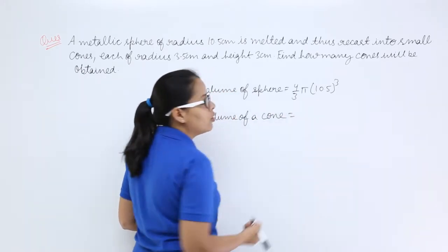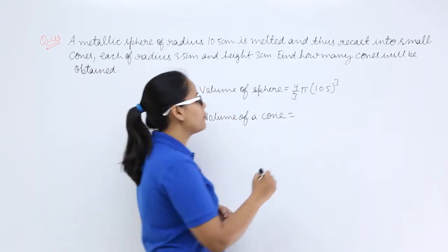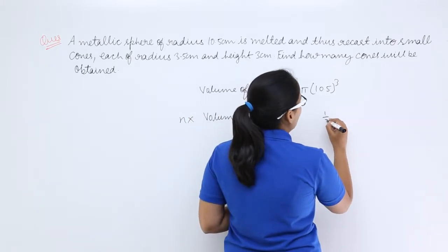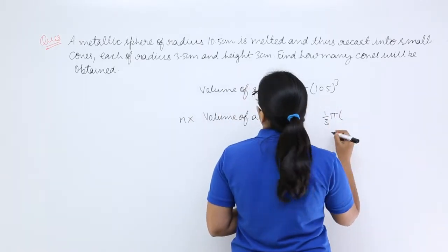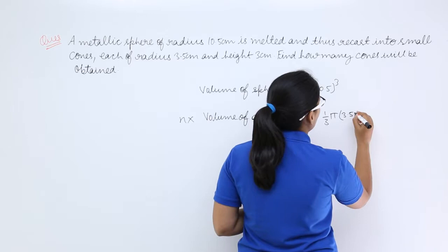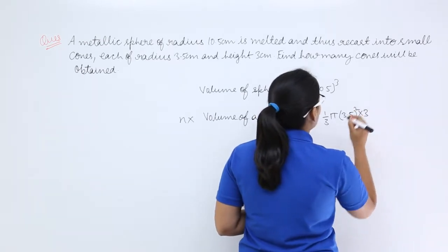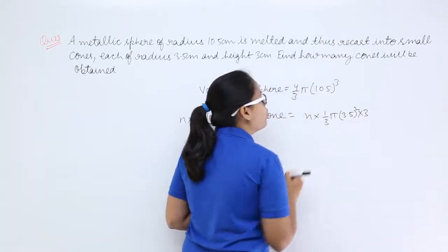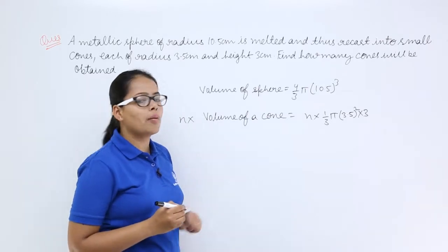Volume of a cone, which means one cone will be 1/3 π r² where r is 3.5 and height is 3. And how many cones are there? There are n number of cones.